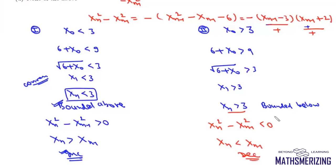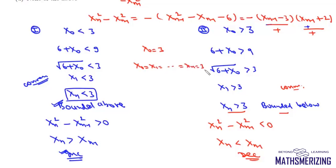Since the sequence is bounded below and monotonically decreasing, it will converge. What about if x₀ equals three? If x₀ is three, then the sequence is a constant sequence, and a constant sequence is always convergent. So the sequence converges for all possible values of x₀.